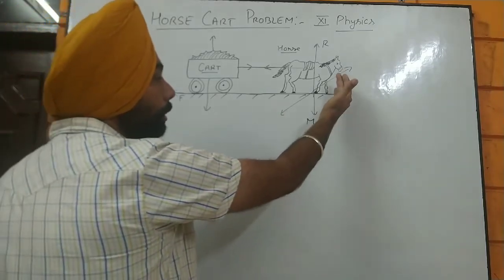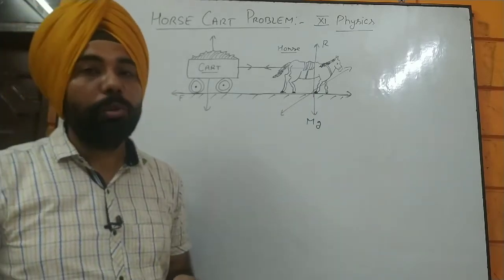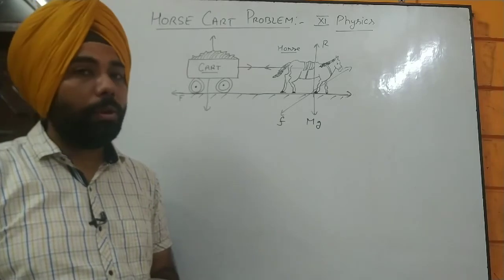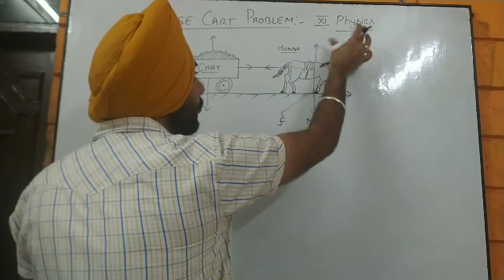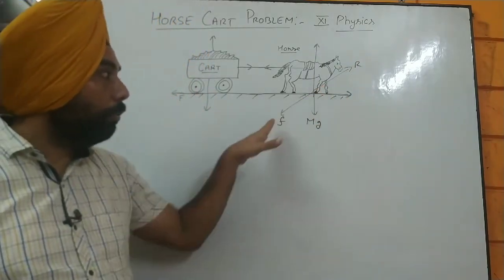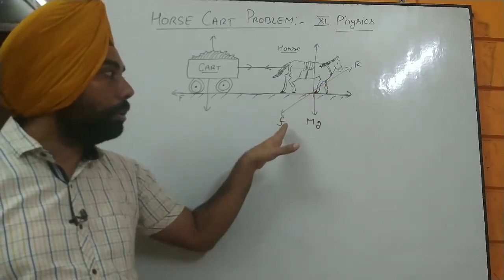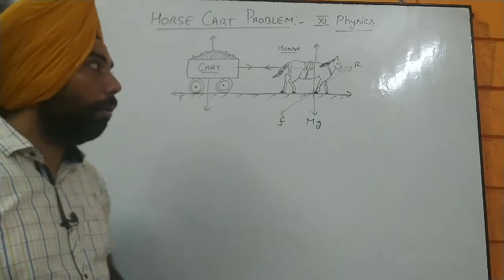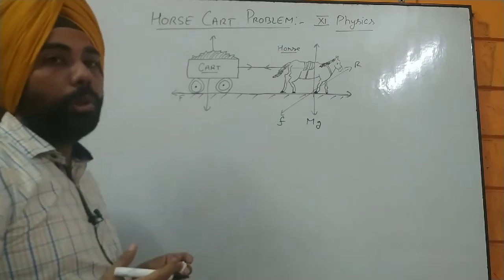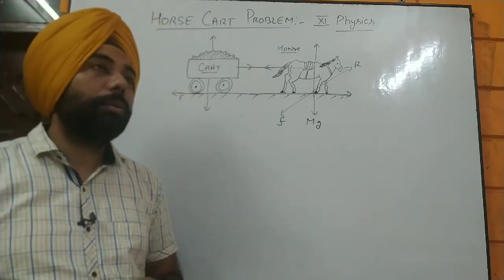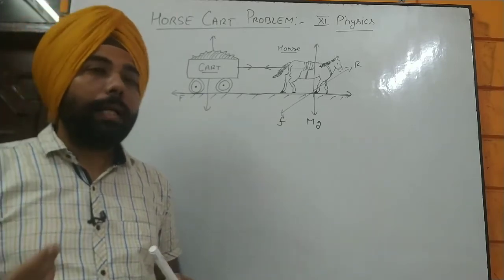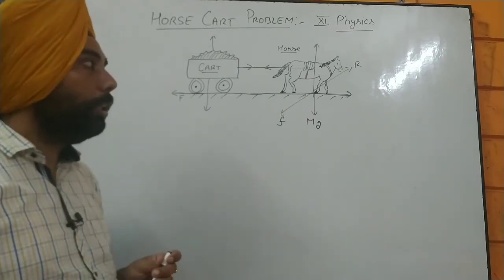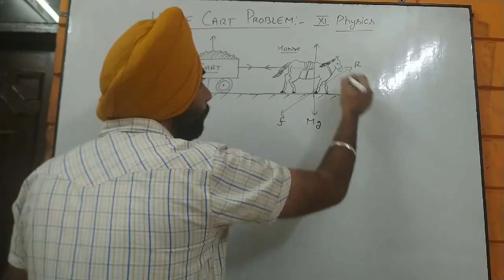Let's assume the horse is pushing the road backward, which is the simplest case of Newton's third law. The horse pushes the road with force small f, and it gets a reaction force R in return. That is the force F pushed by the horse, and R is the normal action of that force. You can take the weight in the downward direction. If the normal action is at an angle, you can resolve R into two components — one with sin theta and one with cos theta. The axis attached to the angle is always taken as the cos theta component.